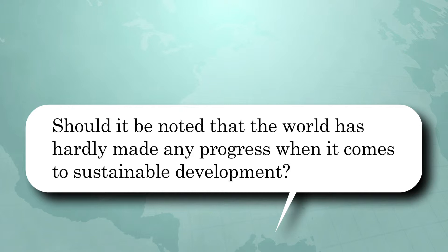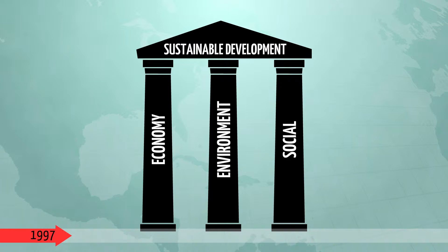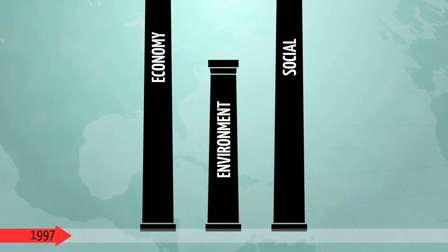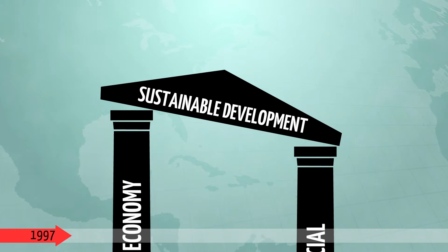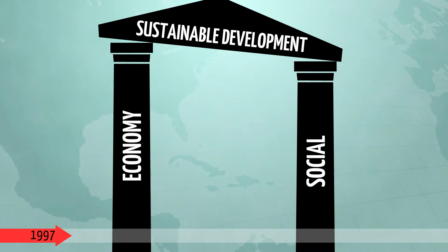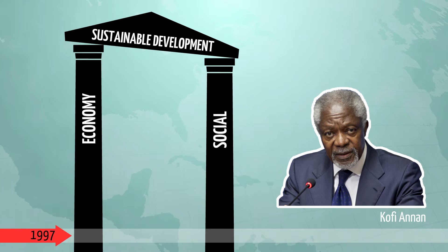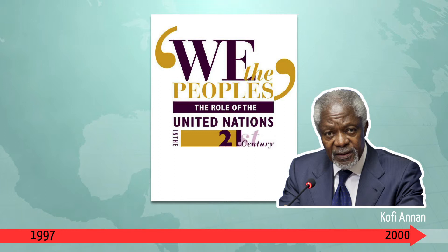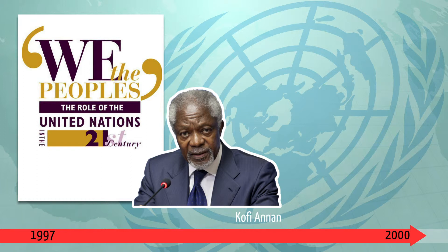Should it be noted that the world has hardly made any progress when it comes to sustainable development? There is progress when it comes to the other two pillars of sustainable development, especially in the countries of Asia and South America which have experienced high economic growth. Also, progress has been made when it comes to the social pillar. For this pillar, Kofi Annan, former Secretary General of the United Nations, has made an important contribution. In 2000, he provided the initiative for the report We the Peoples: the Role of the United Nations in the 21st Century.